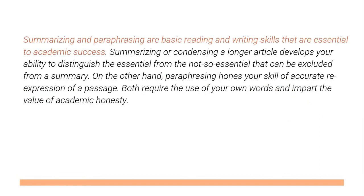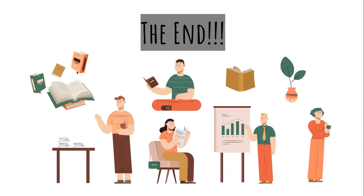Summarizing and paraphrasing are basic reading and writing skills that are essential to academic success. Summarizing or condensing a longer article develops your ability to distinguish the essential from the not-so-essential. On the other hand, paraphrasing hones your skill of accurate re-expression of a passage. Both require the use of your own words and impart the value of academic honesty. In general, summarizing and paraphrasing are essential in writing academic texts, especially when you write a technical paper and have to use other authors' works to support your discussion and provide substantive argument in your own work. And that's it for this video. I hope you learned something. Thank you for watching and see you again on the next video.